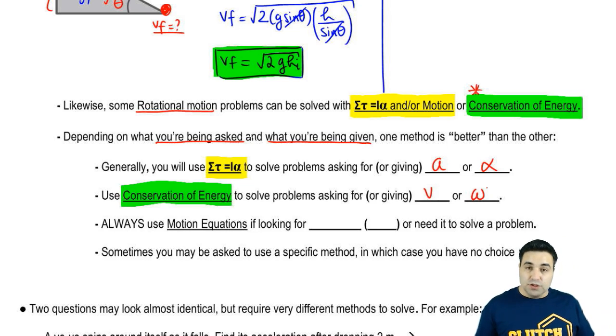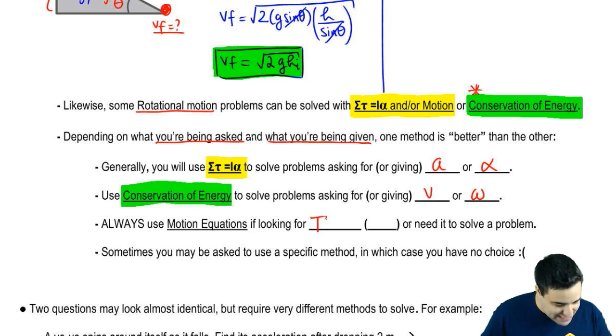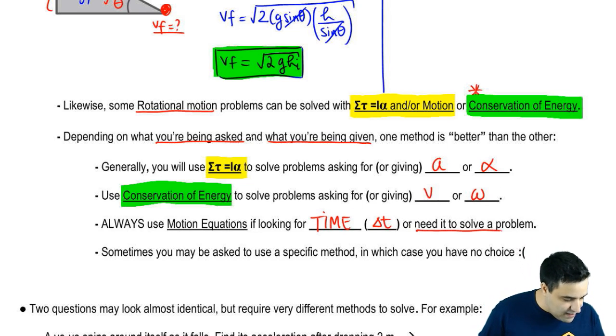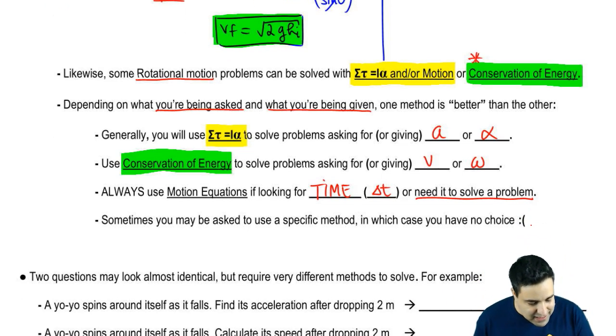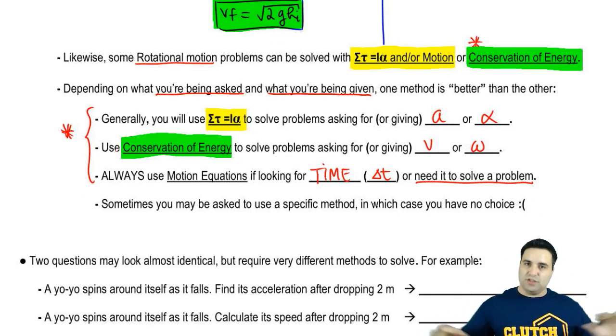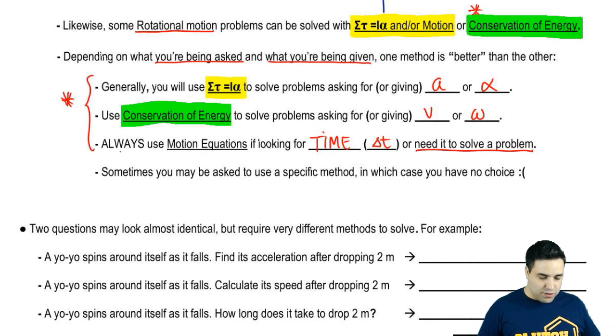Conservation of energy is better for problems that are asking or giving velocity v or velocity omega. Okay? You're always going to use motion equations if you're looking for time, time delta t. Or if you need time to solve the problem somehow. Okay? So you're always going to need motion equations.